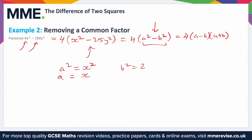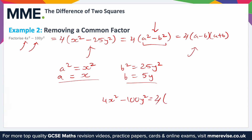We also notice that b squared is equal to 25y squared. This might be a little trickier than usual — square rooting b squared gives b, and on the right-hand side we handle the two parts separately: the square root of 25 is 5, and the square root of y squared is just y, so b is 5y. Substituting in, our final answer is 4x squared minus 100y squared equals 4 times x minus 5y times x plus 5y.